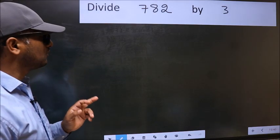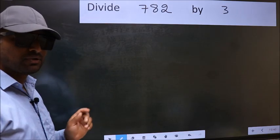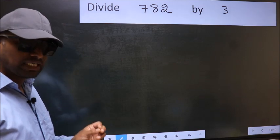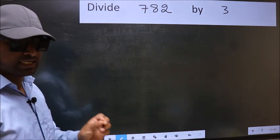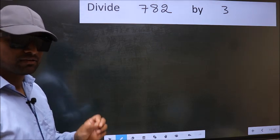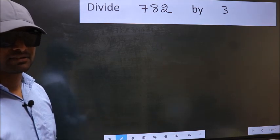Divide 782 by 3. While doing this division, many do this mistake. What is the mistake that they do? I will let you know. But before that, we should frame it in this way.